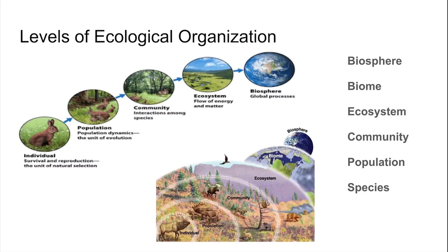Above that is the ecosystem. In addition to including living organisms — biotic factors — ecosystems also include abiotic, non-living factors, for example the type of soil or temperature, that sort of thing, within a particular area.